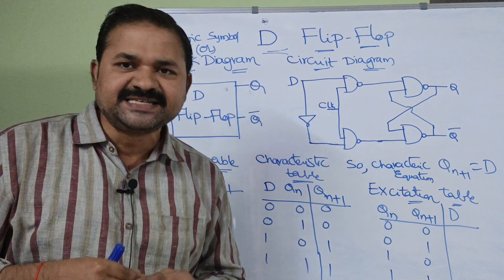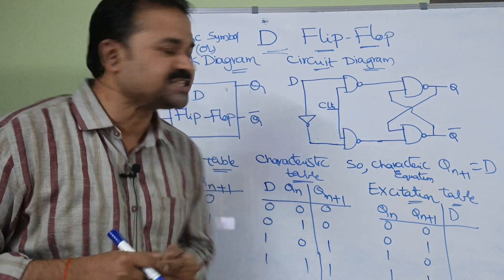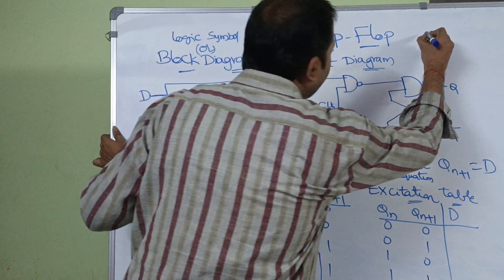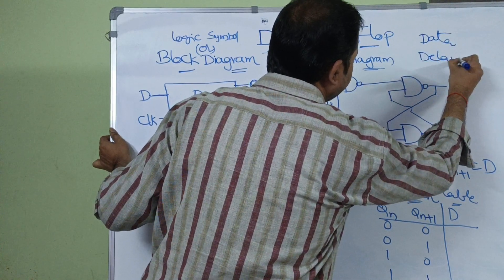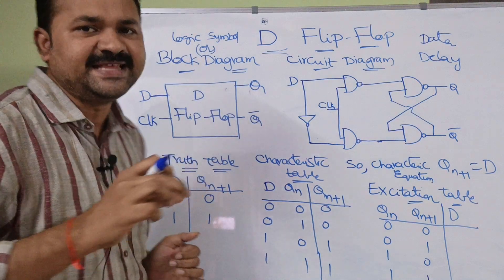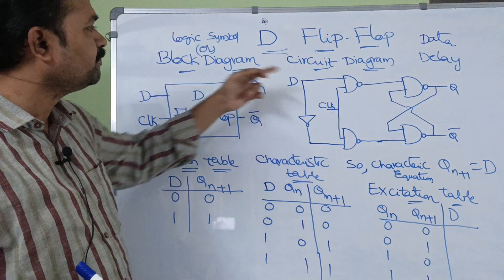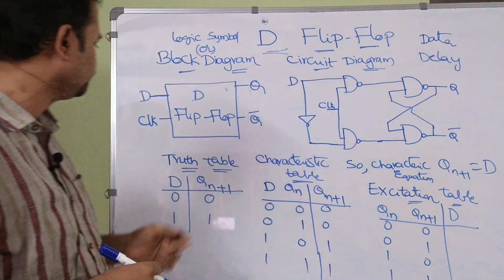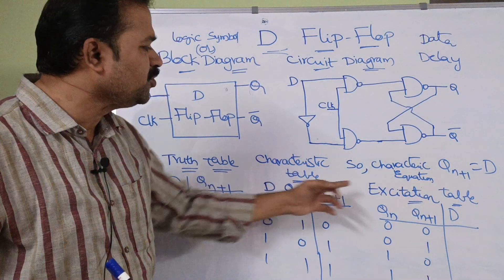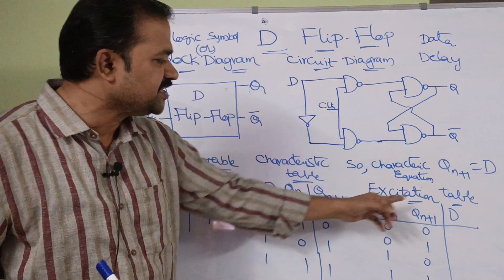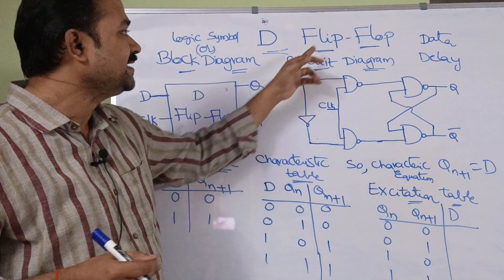Let us discuss about the D flip-flop. D stands for data, or we can also call it delay. In this video we are going to discuss about the block diagram, circuit diagram, truth table, characteristic table, characteristic equation, as well as the excitation table of the D flip-flop.